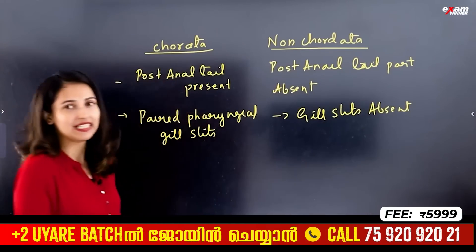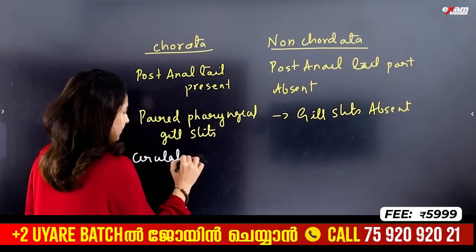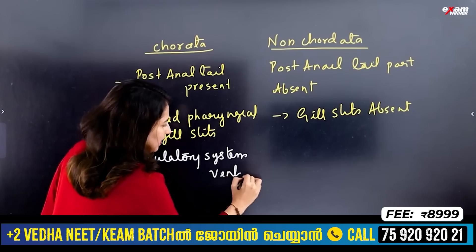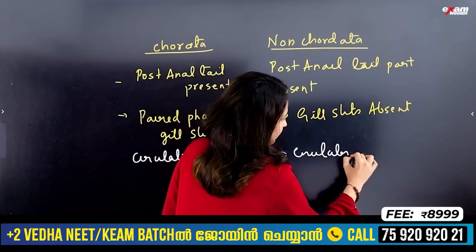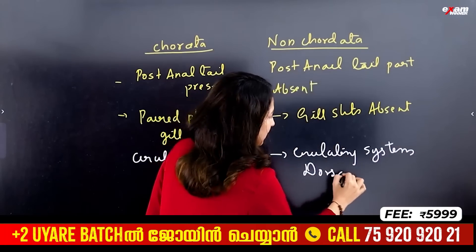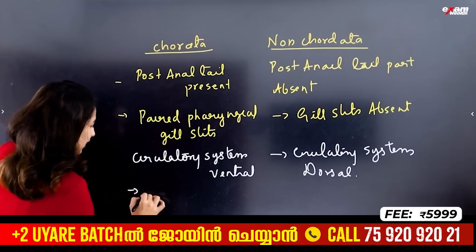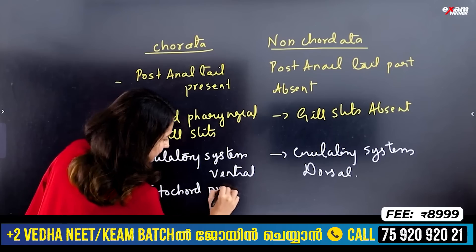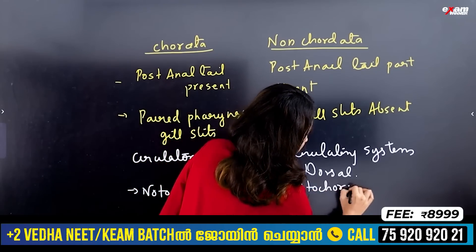Pharyngeal gill slits are present in chordates and absent in non-chordates. The circulatory system is on the ventral side in chordates — the heart is ventral. In non-chordates, the circulatory system is on the dorsal side. Notochord is present in chordates and absent in non-chordates.